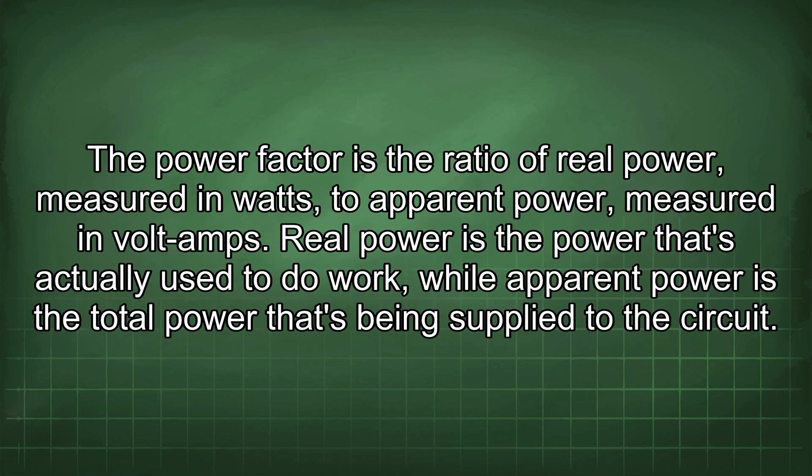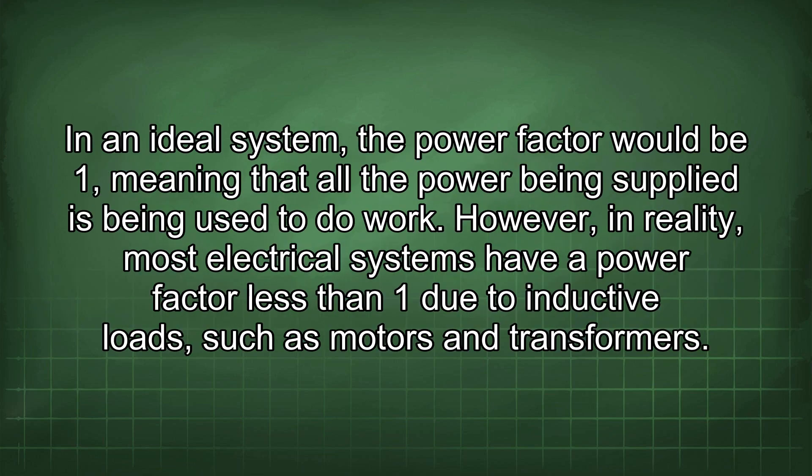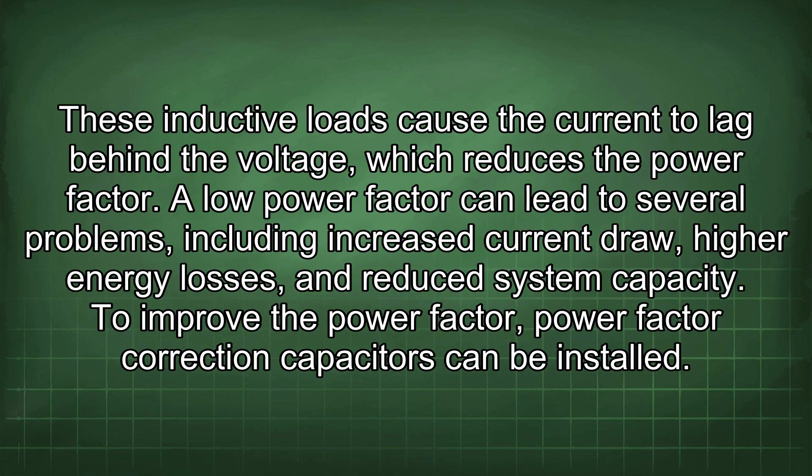The power factor is the ratio of real power — measured in watts — to apparent power — measured in volt-amps. Real power is the power actually used to do work, while apparent power is the total power being supplied to the circuit. In an ideal system, the power factor would be one, meaning all the power being supplied is being used to do work. However, in reality, most electrical systems have a power factor less than one due to inductive loads such as motors and transformers, which cause the current to lag behind the voltage.